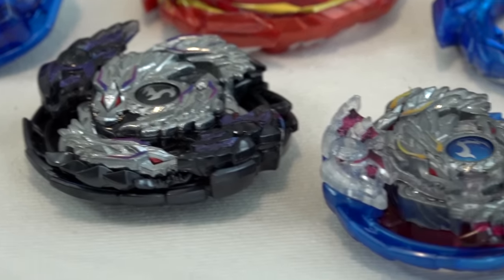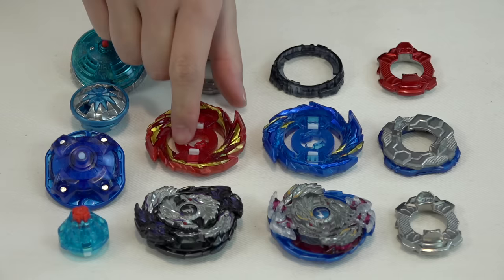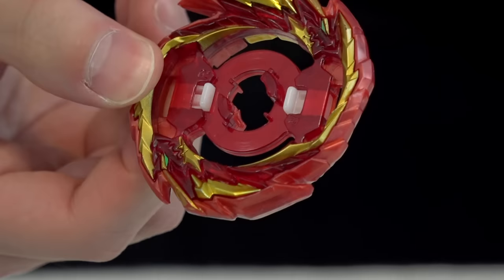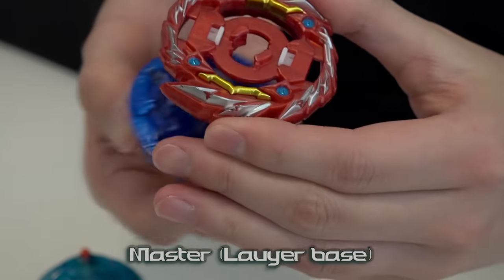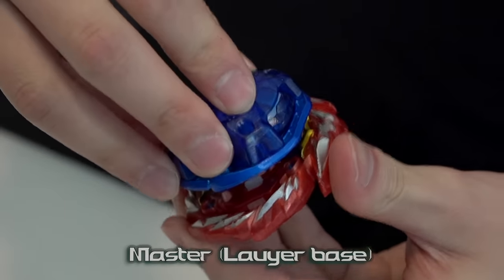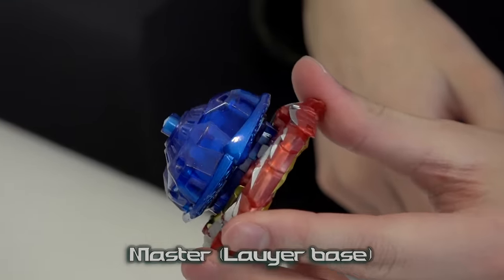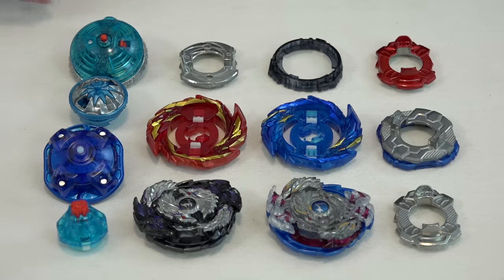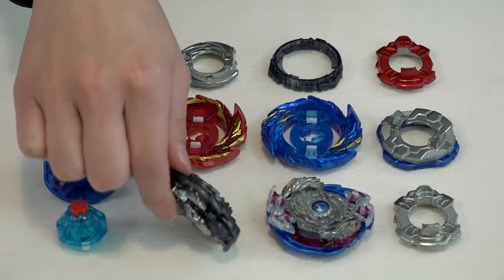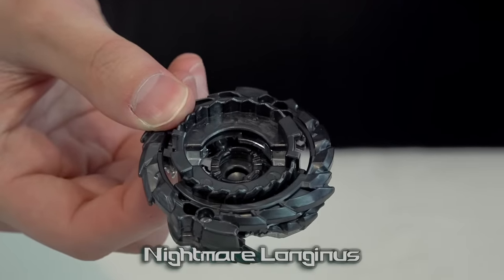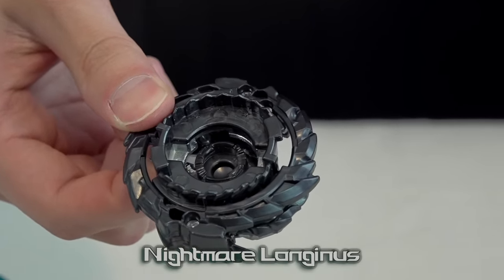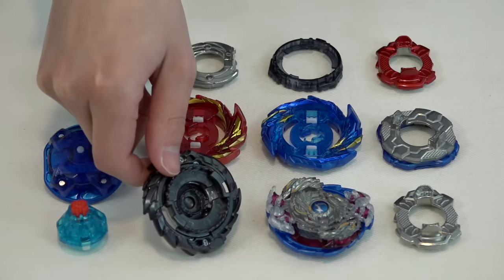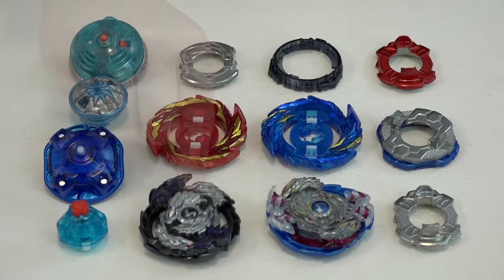The most important piece comes from Master Diabolos because this is a piece that allows us to actually put driver and disc on either side of that layer. It's super crazy. This is the only layer that has that ability. Plus we also have our Nightmare Longinus, another critical component to make our combo. This Nightmare Longinus was a game changer back then because it was a layer and disc combination all in one and we're going to maximize that capability.